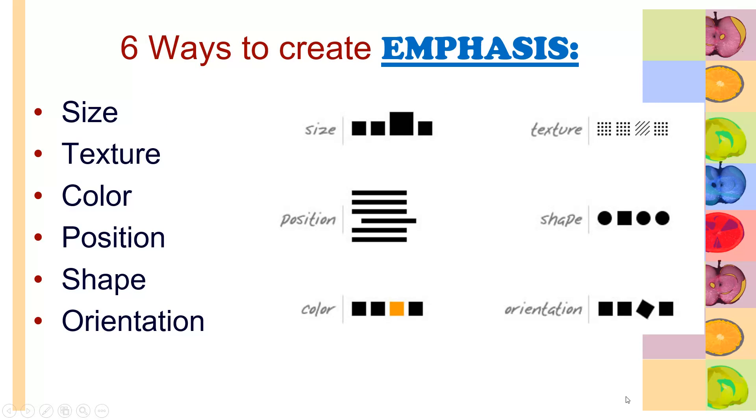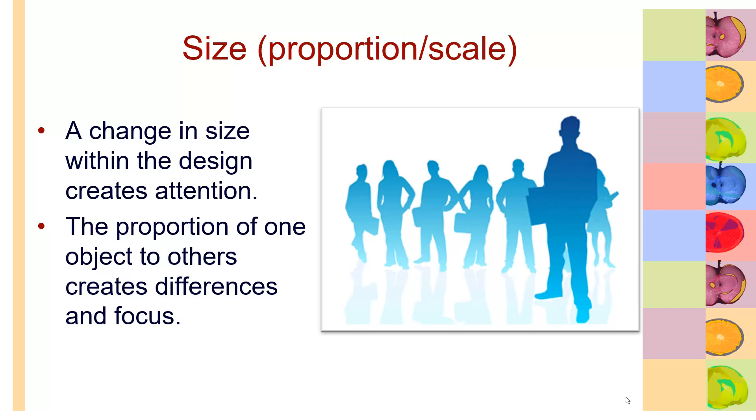There are basically six general ways to create emphasis. You could whittle it down to about four, and some of these can fit in different categories. But I'm just going to kind of breeze through the basic six that we tend to teach a lot. You can change things to make them stand out by size, texture, color, position - how you place things - shape, and orientation.